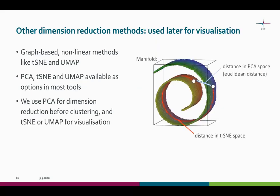Now, we have talked about principal component analysis, but as mentioned, other dimension reduction methods are used for visualization after the clustering. We are dealing with TSNE and UMAP, which are both graph-based non-linear methods. Most tools, including Seurat, offer PCA, TSNE, and UMAP as options for visualization. We use PCA for dimension reduction before clustering, and then TSNE and UMAP for visualization.